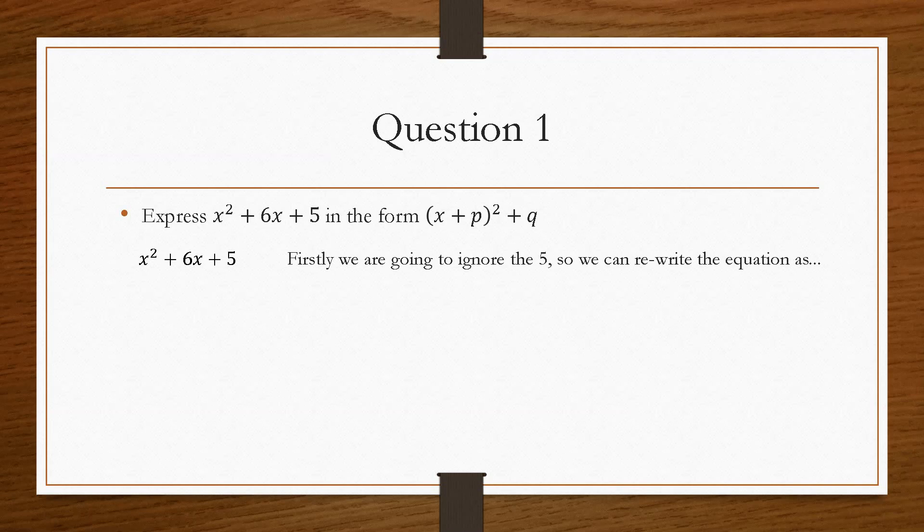So the first thing we're going to do is we're going to ignore the 5. So when we rewrite this, we'll just pretend that the 5 doesn't exist. And we're left with x squared plus 6x. So then we're going to remove an x from each of the terms and we'll pop it into a bracket. So we get x plus 6.